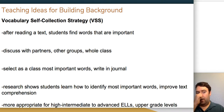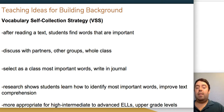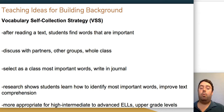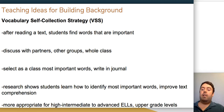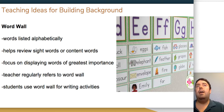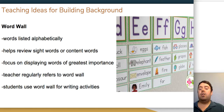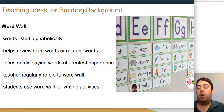The vocabulary self-collection strategy has students read a text, identify the words most important to understanding it, discuss those words with a partner, decide together on the most important words, write them in a journal, research their meanings independently, and then share what they learned with the class. Word walls are another great tool—interactive word walls let students add new words they encounter under the appropriate letter of the alphabet, supporting spelling as well. Including visuals on the word wall is highly beneficial.